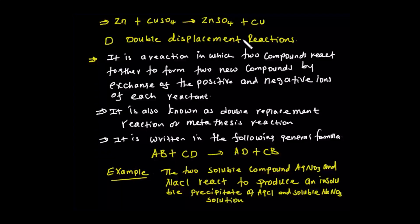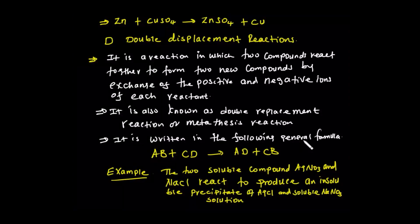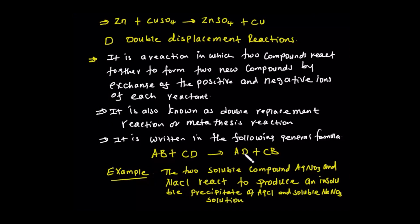A double displacement reaction is also known as a double replacement reaction or a metathesis reaction. It is written in the following general formula: AB reacts with CD to give AD and CB.